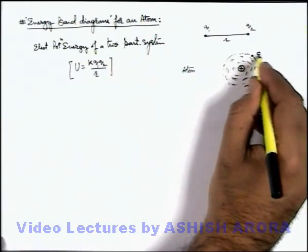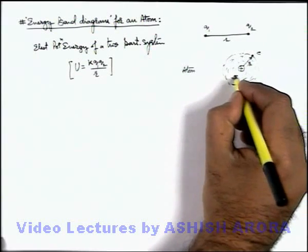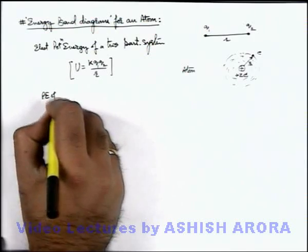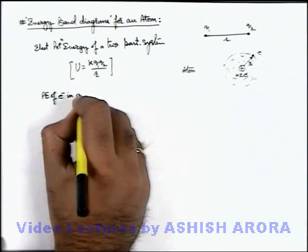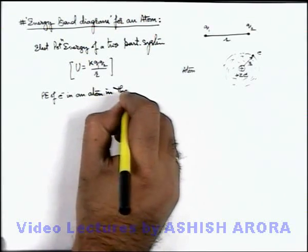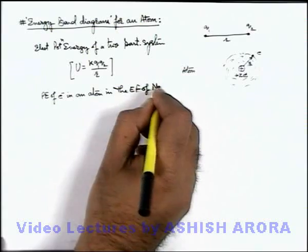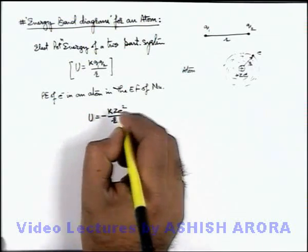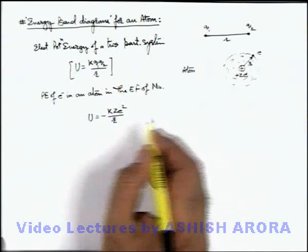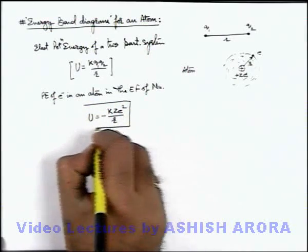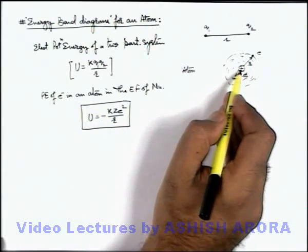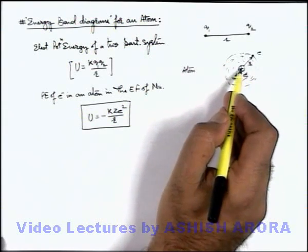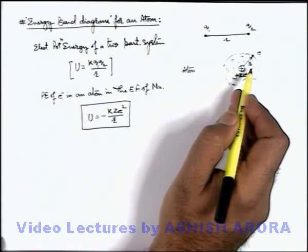If we talk about an electron located at a distance in the electric field of nucleus, the potential energy can be given as U equals minus k z e squared by r, because the charge of nucleus is z e and e is the electronic charge, where r is the separation of electron from the nucleus. If electron is very close to nucleus, the total potential energy of system will be tending to negative infinity, and if it is far away from the nucleus its potential energy can be taken as zero.